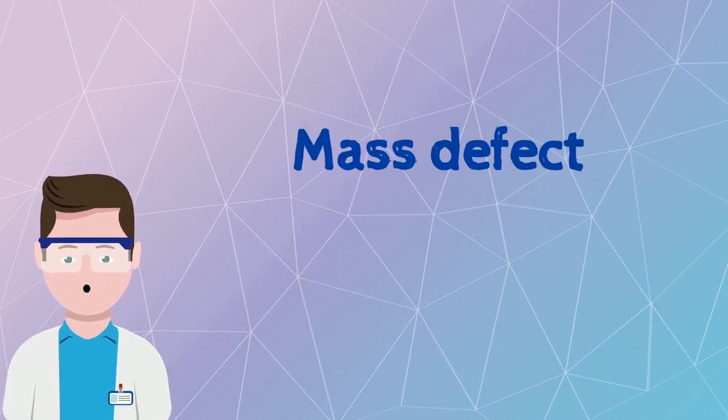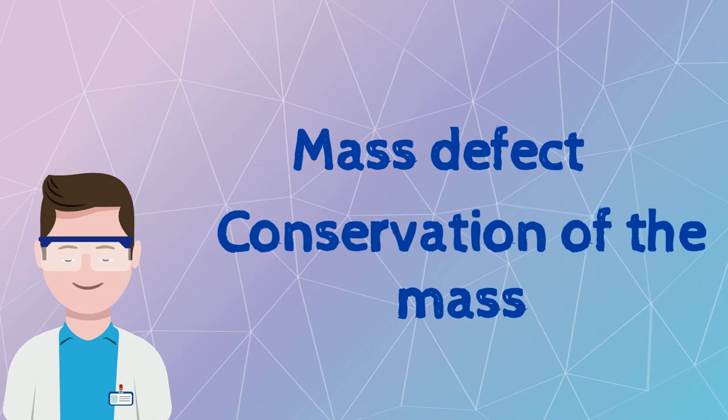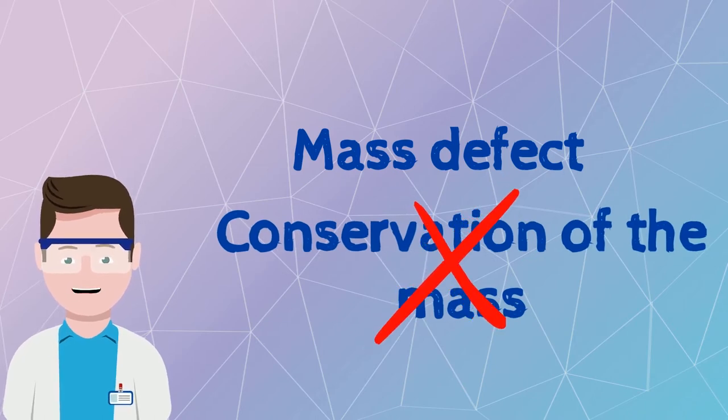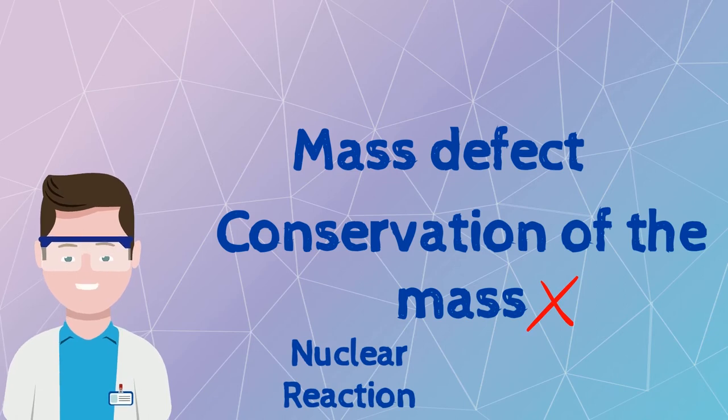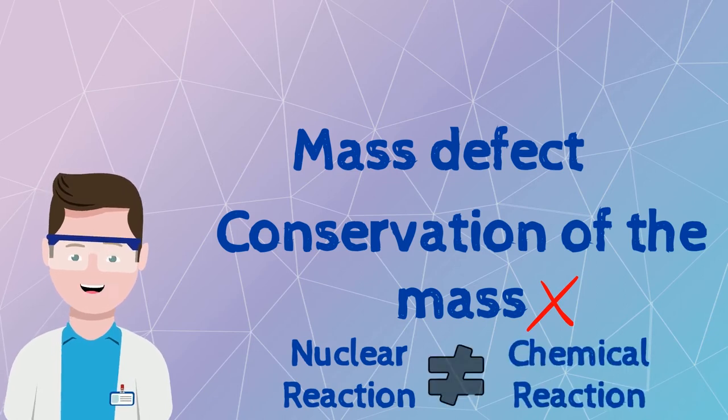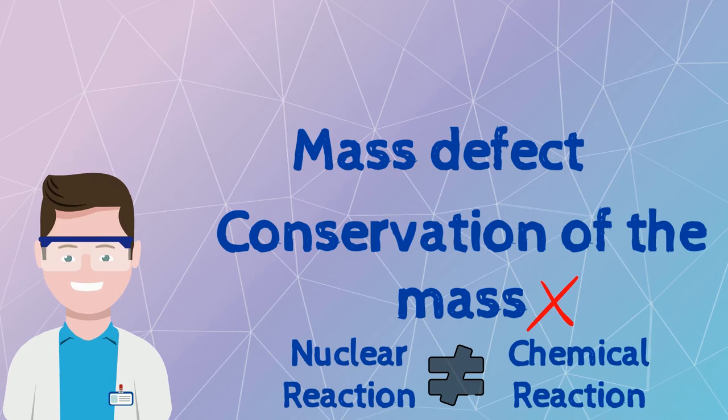This phenomenon is called a mass defect, when the conservation of the mass does not work. This is the reason we call these reactions nuclear and not chemical ones. In chemical reactions, the mass of reactants and products is the same.